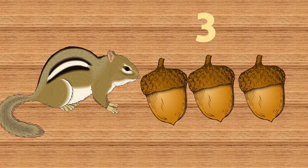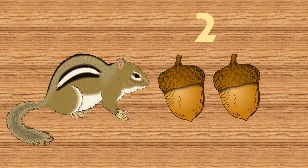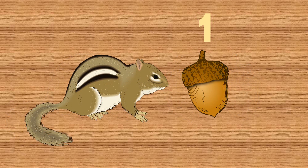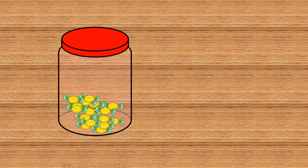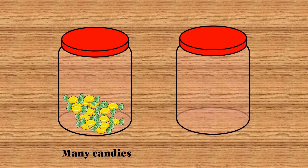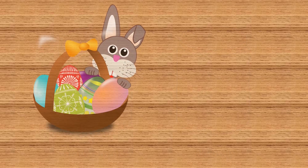A squirrel saw three nuts and felt very hungry. It ate one nut and now the squirrel has two nuts. It ate one more and now the squirrel has only one nut. After some time it ate that too, and the squirrel has zero nuts.